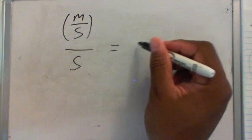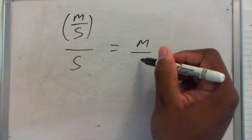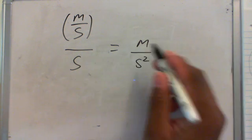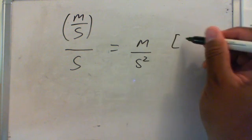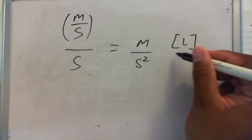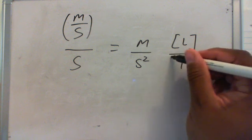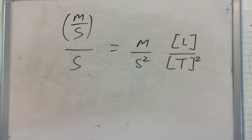Which is basically a velocity per second. Or we can write it in a simpler way like this. Meters per second. Now meters, as we know, is a length, and seconds is a time, and it's squared.